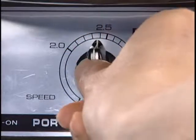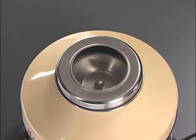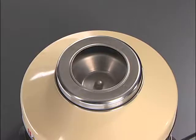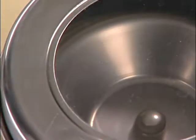Start centrifugation by slowly turning the speed dial to a preset value. The high speed of spinning results in a centrifugal force causing the precipitate to separate.